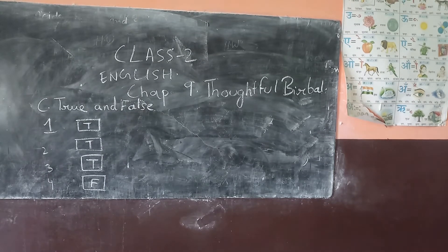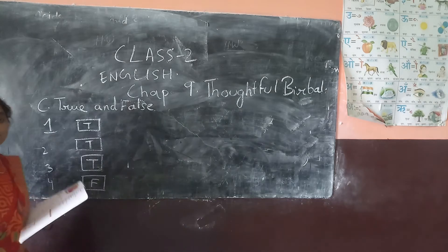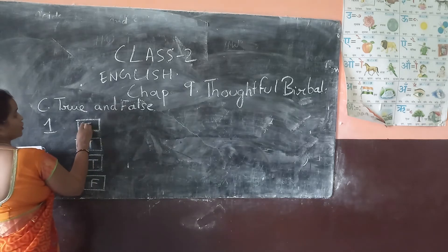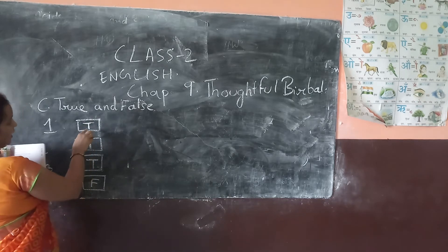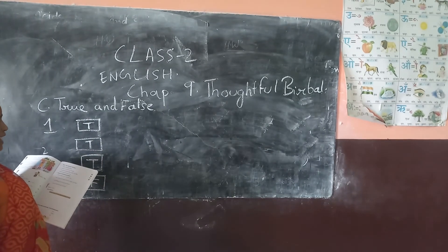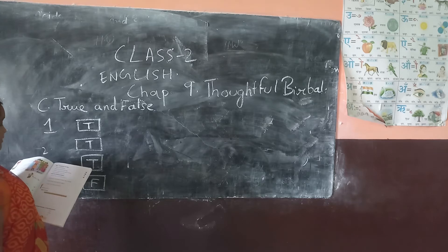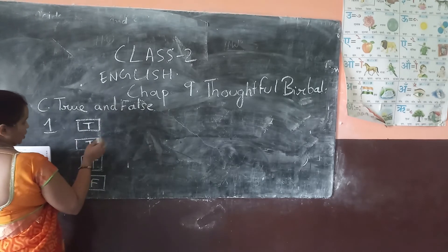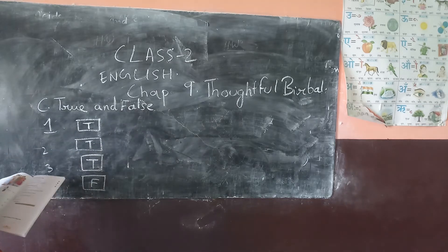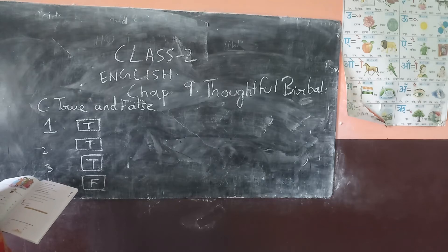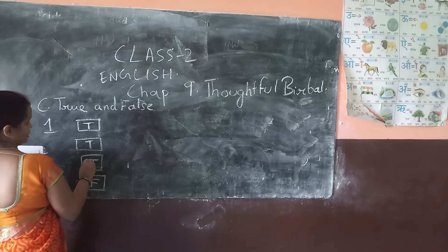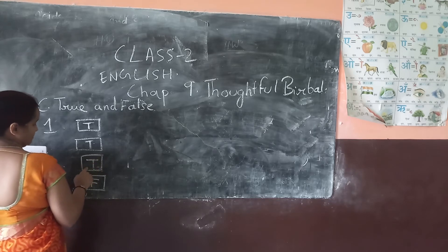Now let's do true and false. The first one is: it was a poor mental brain — True. So for true, you have to write T in the box. Second one: will put his hand into the leg — this is true, write T in the box. Third one: the man passed overnight in the leg — T in the box.